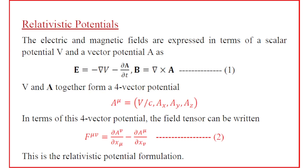Relativistic potential defines a foundation. We already know that the electric field is related to the potentials as E = −∇V − ∂A/∂t, where V is the electric scalar potential and A is the magnetic vector potential. Similarly, the magnetic field B = ∇ × A.